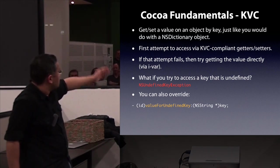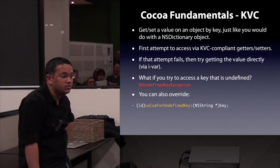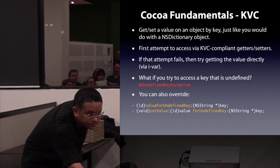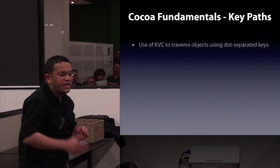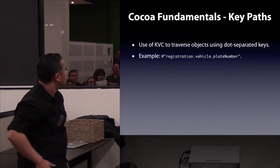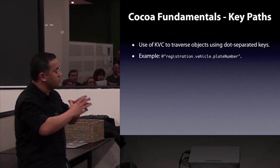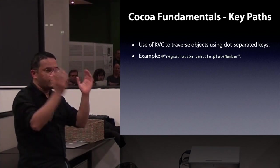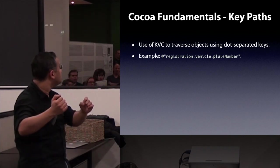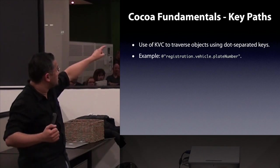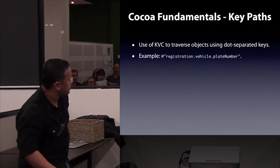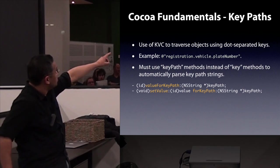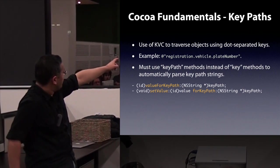To avoid NSUndefinedKeyException, you can override valueForUndefinedKey:, which is another way to define custom properties. Key paths are one step above KVC — they allow you to traverse objects using dot-separated keys. For example, if I have a Registration object with a Vehicle attached, I can get the vehicle's plate number using key path notation. You substitute valueForKey: with valueForKeyPath:, and likewise for setting.